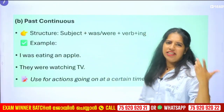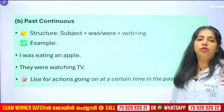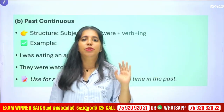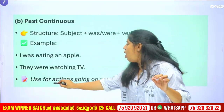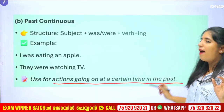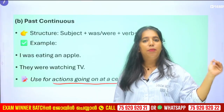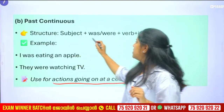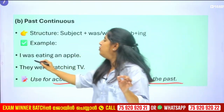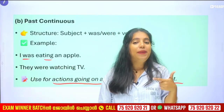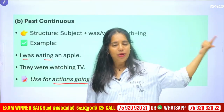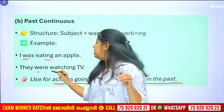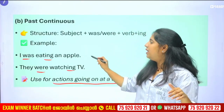Next is past continuous — for actions going on at a certain time in the past. The structure uses 'was' or 'were' plus the '-ing' form. For example, I was eating an apple. They were watching TV. I, he, she use 'was'; they, you, we use 'were'.